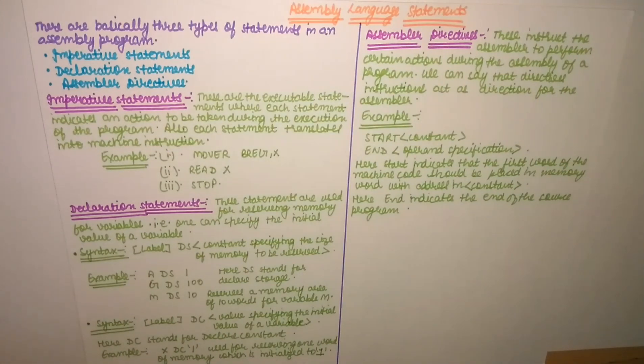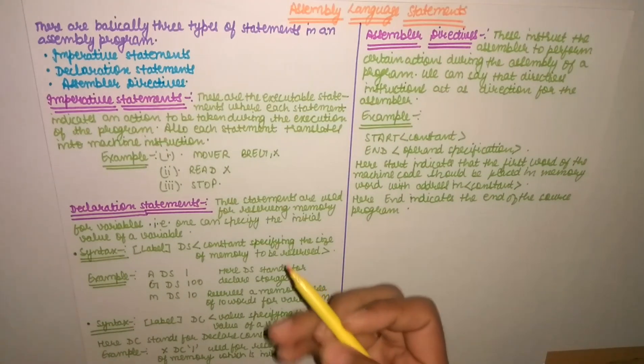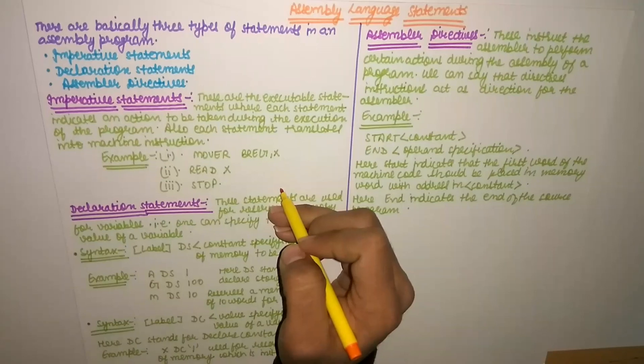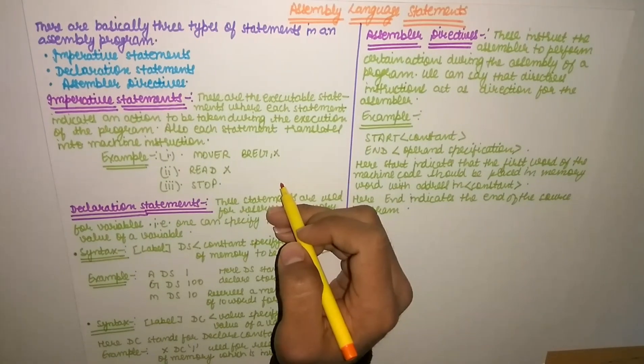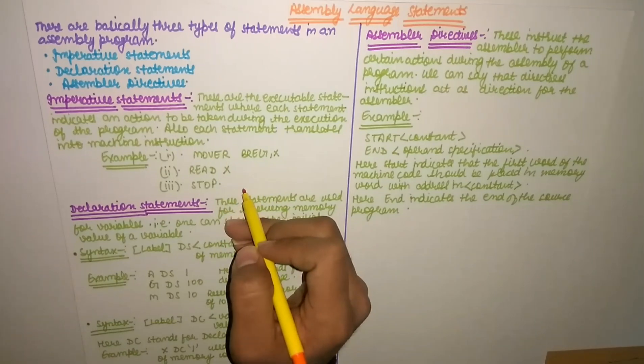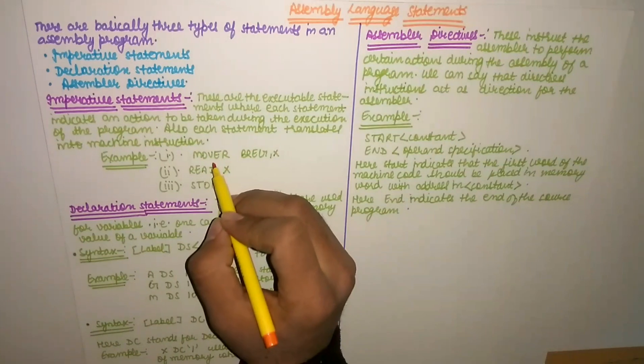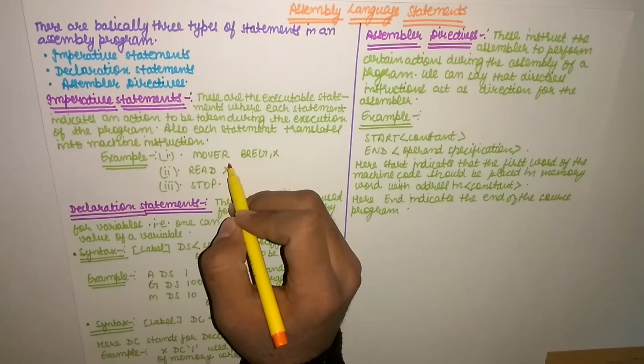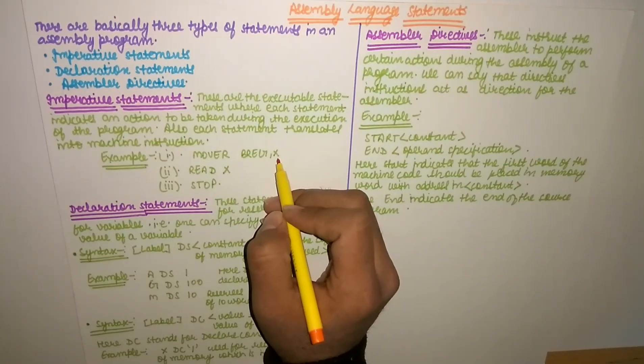As we have seen in the past video, there are opcodes. Opcodes for machine instructions are given, like stop for 00, mover for 04. So I have written a small code on assembly language statements. These are imperative statements. So we will see how these are imperative. MOVER, M-O-V-E-R, BREG, X.